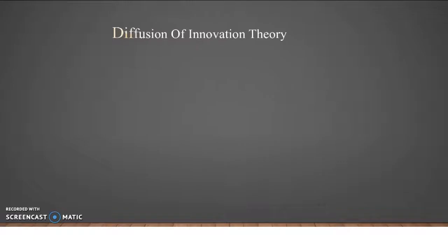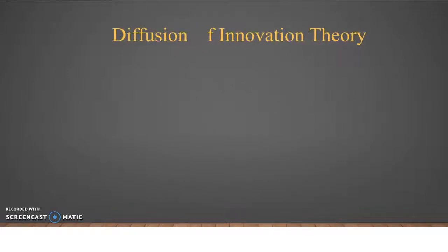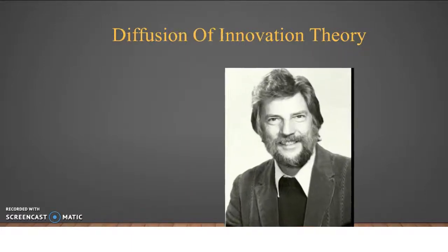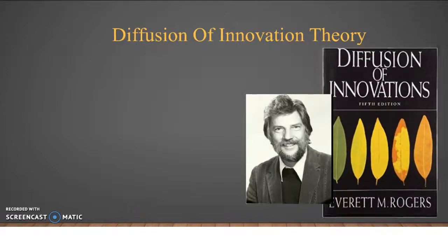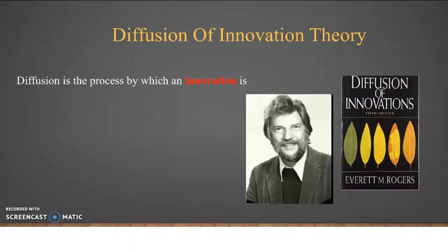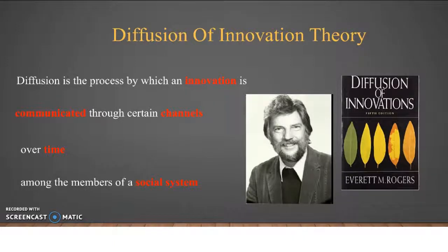Diffusion of Innovations is a theory that seeks to explain how, why and at what rate new ideas and technologies spread through cultures. In 1962, Everett Rogers, a sociology professor, popularized this theory in his book Diffusion of Innovations. According to Rogers, diffusion is a process by which an innovation is communicated through certain channels over time among the members of a social system. The book proposed four elements of diffusion: innovation, communication channels, time, and social system.